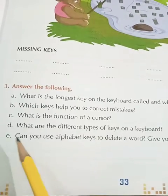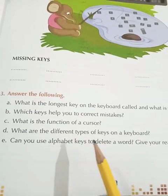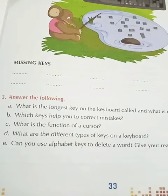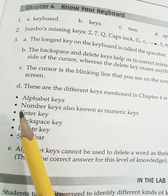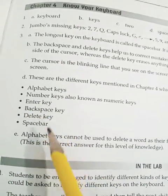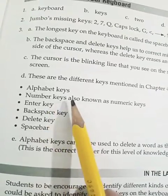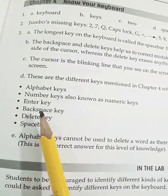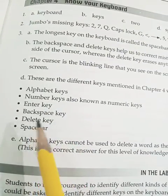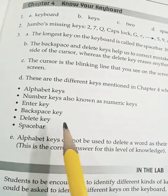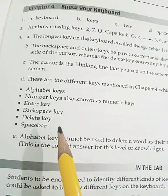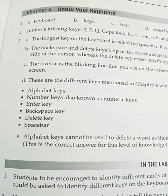Part D: What are the different types of keys on a keyboard? The different types of keys are: alphabet keys, number keys, special keys, backspace key, delete key, and space bar.